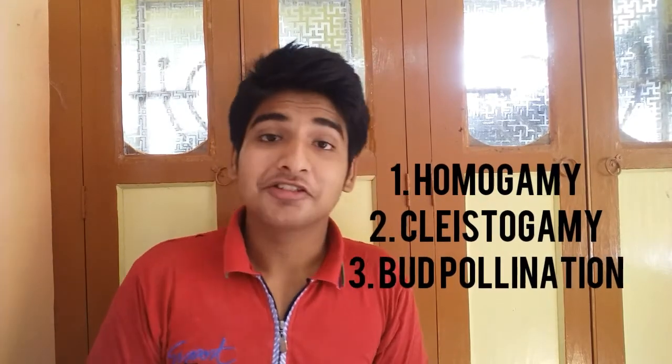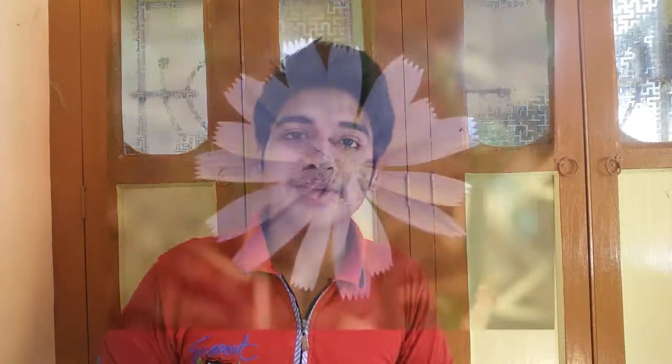Autogamy also has three different types. The first one is homogamy, the second one is cleistogamy, and the third one is bud pollination.